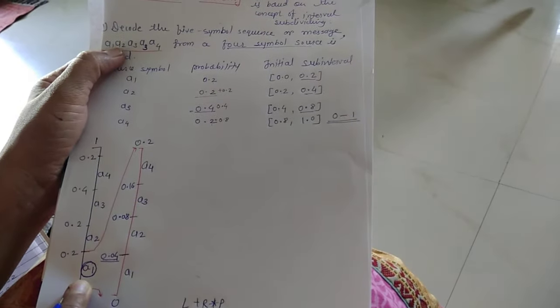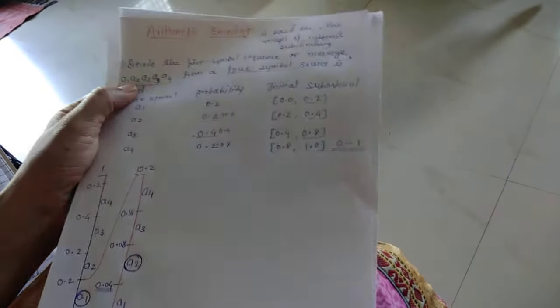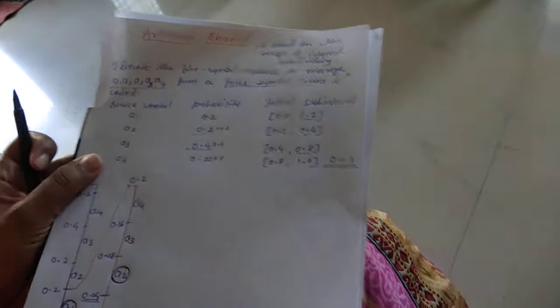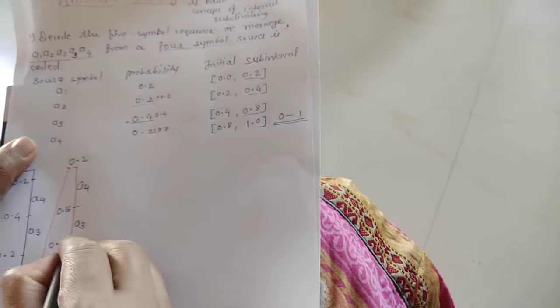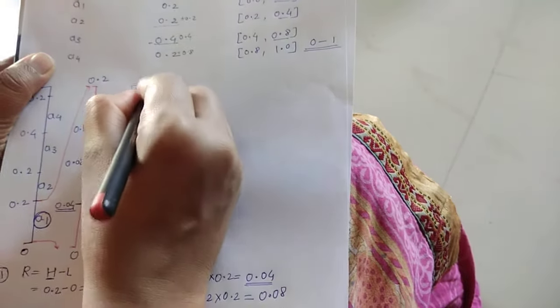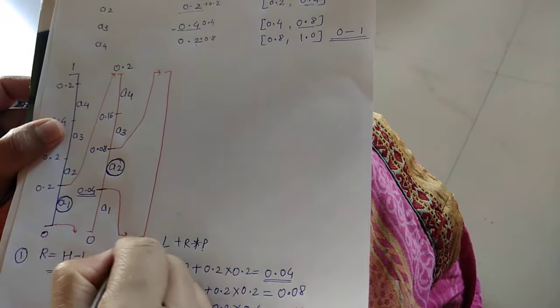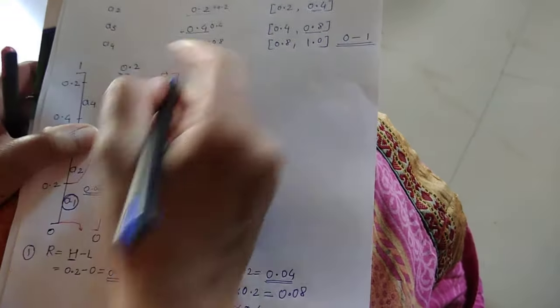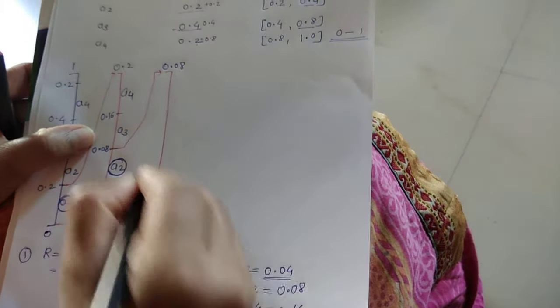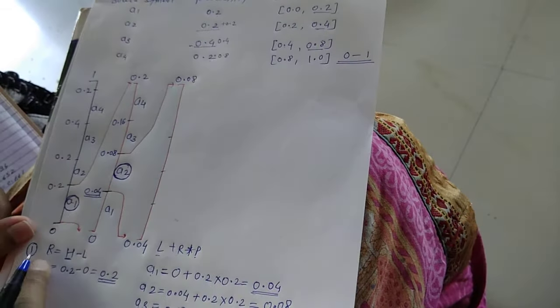For the second iteration, we expand the a2 interval. The range is from 0.04 to 0.08. We divide this into various sub-intervals again — for a1, a2, a3, and a4 — using the same formula.